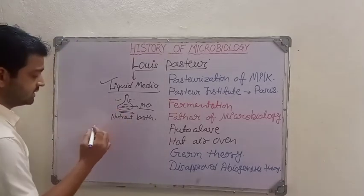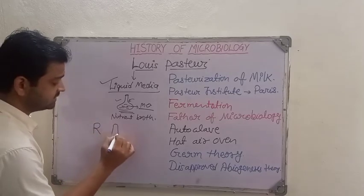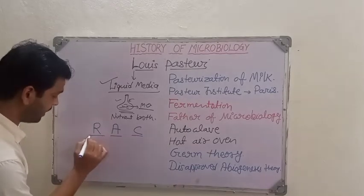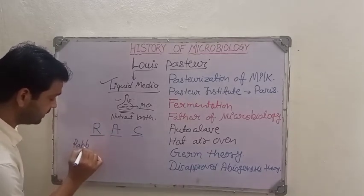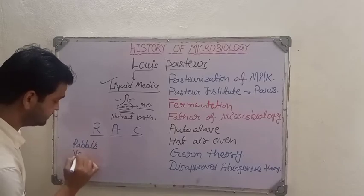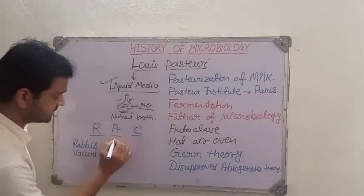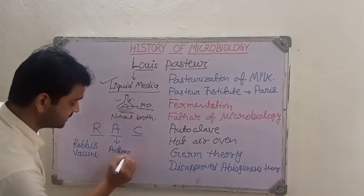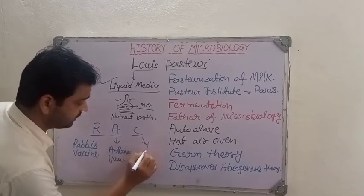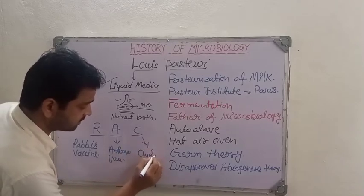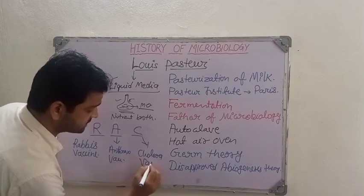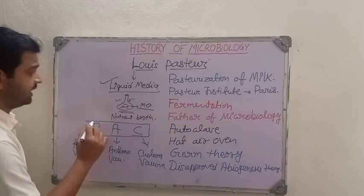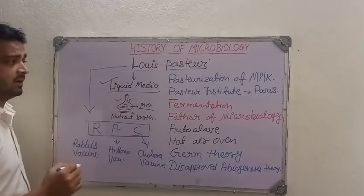Sir Louis Pasteur also gave us three important vaccines, which we can remember using the mnemonic RAC. R for Rabies vaccine, A for Anthrax vaccine, and C for Cholera vaccine. These three important vaccines were all given by Sir Louis Pasteur.